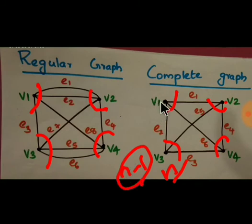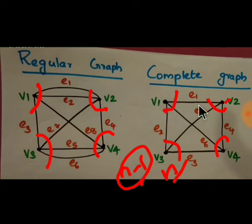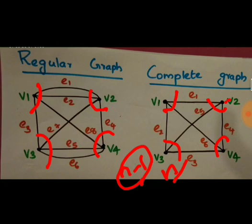In this example there are four vertices V1, V2, V3 and V4, so n equals 4 and n minus 1 equals 3, and all vertices have degree 3 — so it is called a complete graph. The difference: a complete graph can be a regular graph, but a regular graph means all vertices have the same degree, while a complete graph specifically means if there are n vertices the degree will be n minus 1. Thank you.